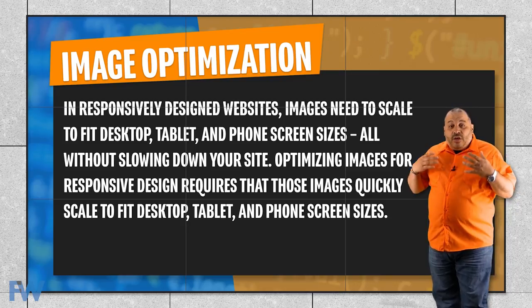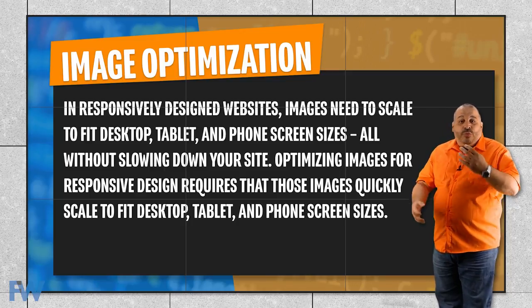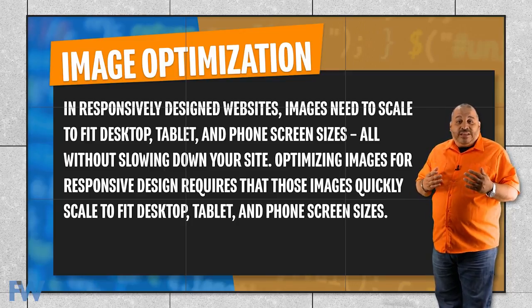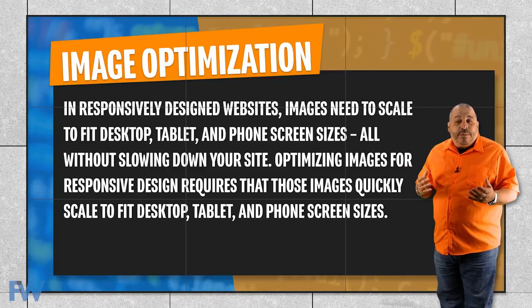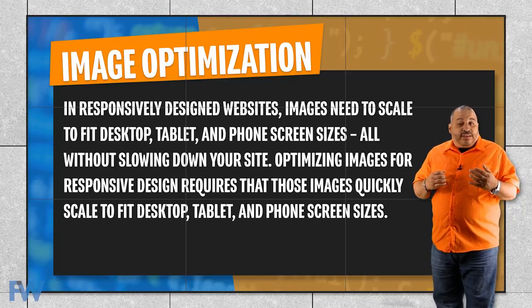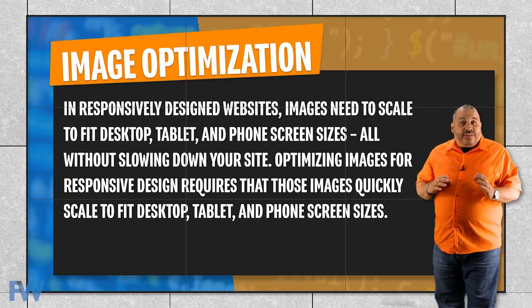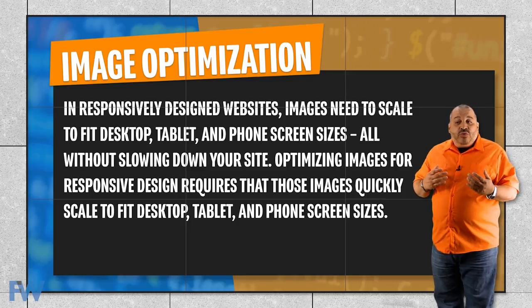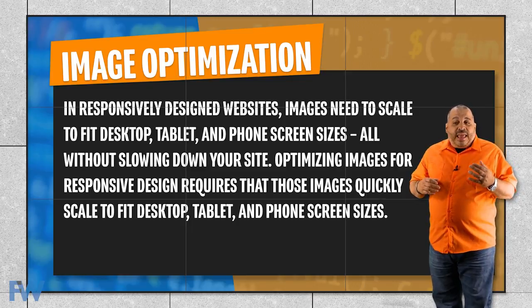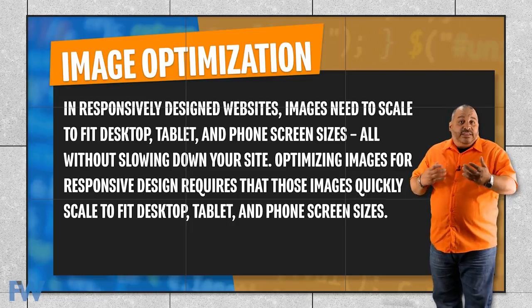The third major tenant of responsive design is image optimization. In web development, image optimization has always been important because we don't want super high resolution images that take a long time to download displayed on the screen when they're going to be displayed in a lower resolution — just wasting time and bandwidth. So in responsively designed websites, images need to scale to fit the screen, whether it's a desktop, tablet, or phone screen, without slowing down the site. There are a couple of different techniques used to optimize images for responsive design, all of which end up allowing the image to quickly scale to fit the available screen size and viewport.